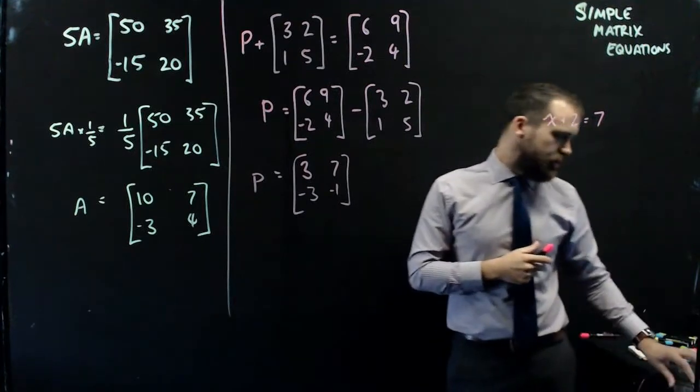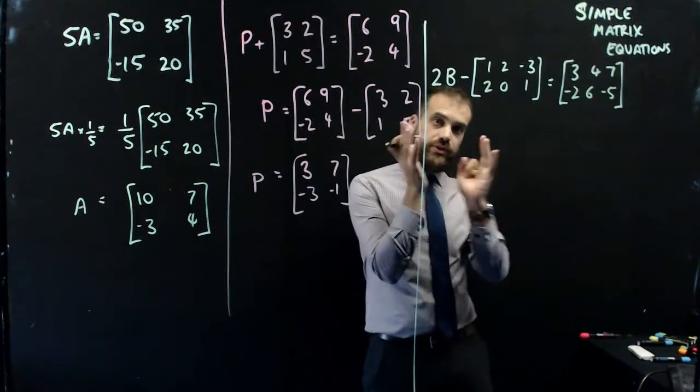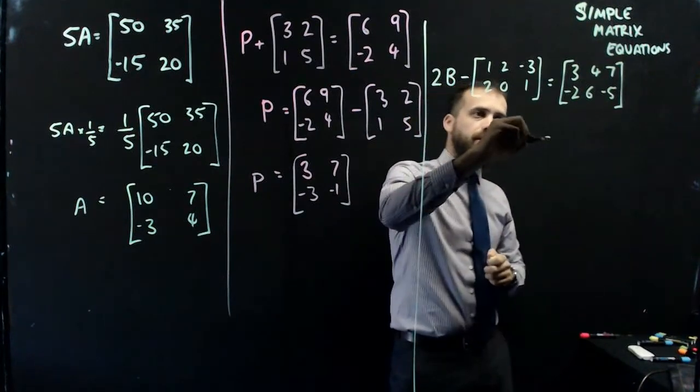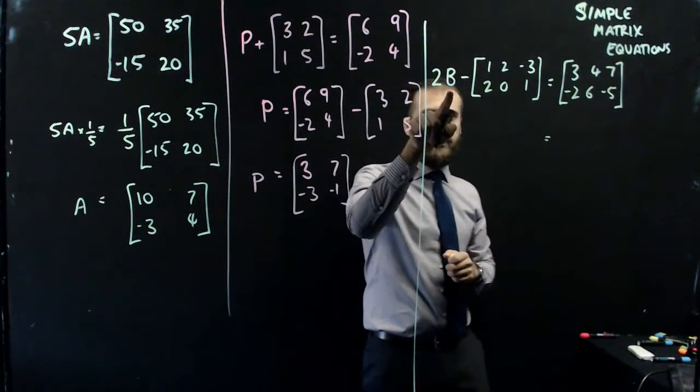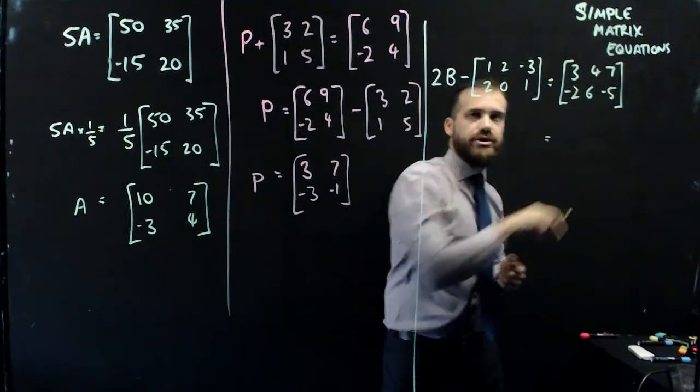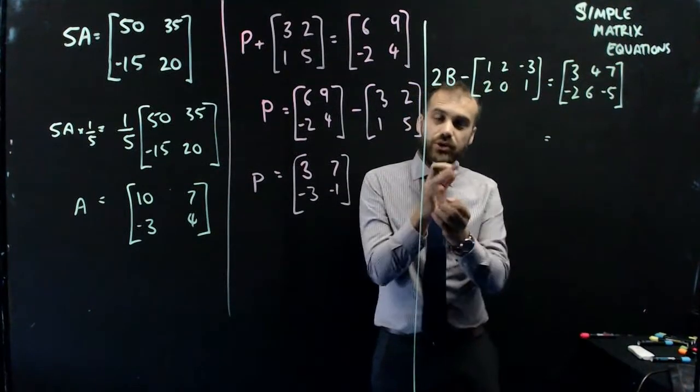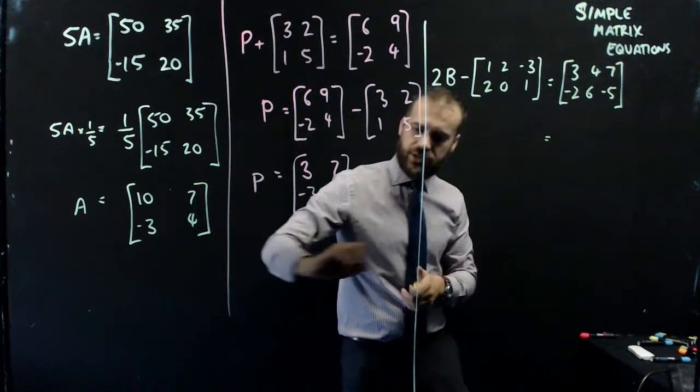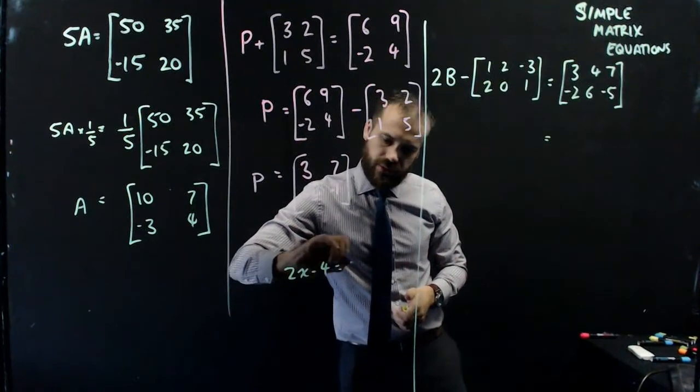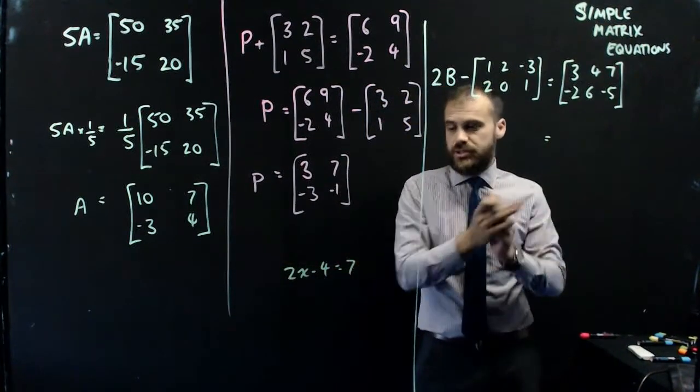So just to complicate matters, we've got this. These were one-step equations. This is a two-step equation. So it's 2B, where B is a matrix, minus this matrix is equal to this matrix. So we can do the same thing. Now, you can always think about these things as just really simple equations, just with matrices.